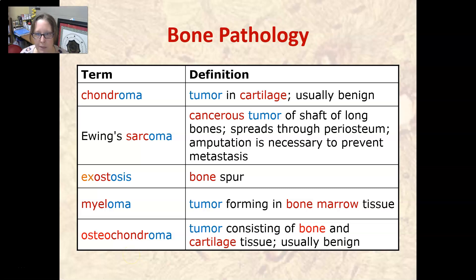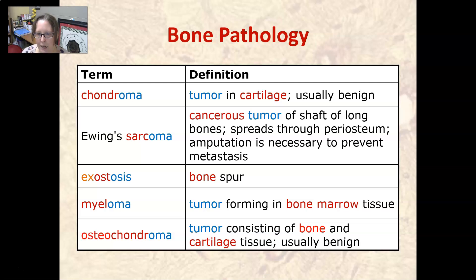Chondroma is a tumor in cartilage. It's usually benign. Ewing's sarcoma is a cancerous tumor of the shaft of a long bone. It spreads through the periosteum, and amputation is necessary to prevent metastasis, or the spreading of the cancer to other organs.